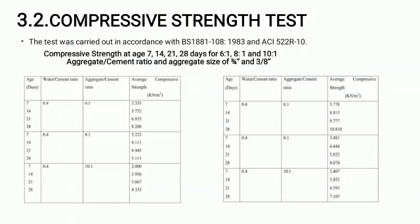Now we will analyze the compressive strength test for pervious concrete. The test was carried out at 7, 14, 21, and 28 days for different mixes and also with different sizes of aggregate. It is clear from the table that if we keep the water-to-cement ratio constant for all cases, then increasing the aggregate-to-cement ratio decreases the average compressive strength. We can also conclude that aggregate having size 3/8 inch has more compressive strength than 3/4 inch.